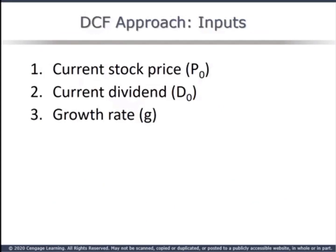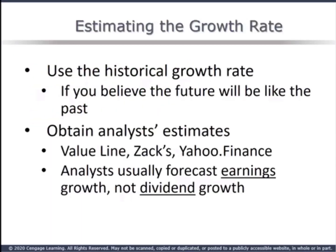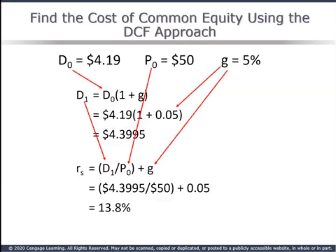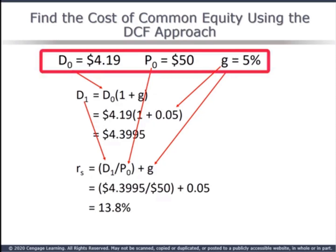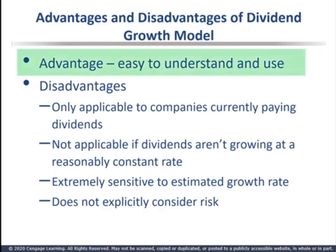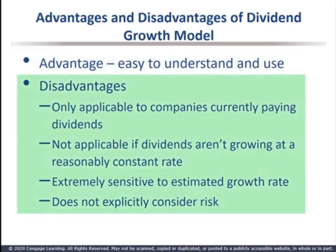To use the discounted cash flow constant growth model, we need three pieces of data: the current stock price (observable), the current or last dividend paid (published history), and the constant growth rate (which requires an estimate). The growth rate cannot be observed — we can use historical data assuming the future will be like the past, or we can use analyst estimates, though analysts typically estimate earnings growth, not dividends growth. Using our given data — D0 of $4.19, current price $50, growth rate 5% — we find the cost of equity is 13.8%. The advantage of the DCF approach is its simplicity; it's easy to use and understand. But it only applies to dividend-paying companies, requires a reasonably constant growth rate assumption, does not consider risk, and is very sensitive to the growth rate.